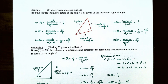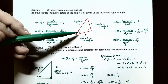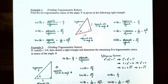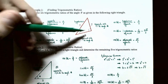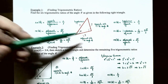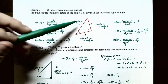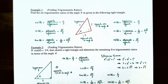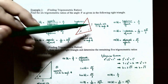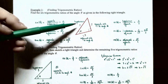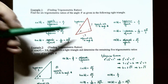Let's practice finding trigonometric ratios in Example 1. Find the six trigonometric ratios of angle theta for the given right triangle. The opposite side of theta has length 2, the adjacent side has length √5, and the hypotenuse has length 3. So the sine of theta is opposite divided by hypotenuse, which is 2/3.